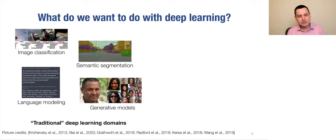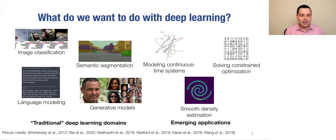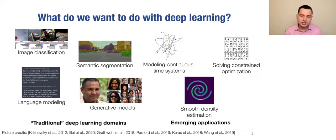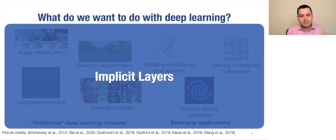We're all aware of the impressive progress these fields have made. But there are also a lot of emerging applications — things like continuous modeling, continuous time systems, smooth density estimation, or solving constrained optimization problems. These are problems that a lot of existing methods in deep learning are not that good at. What we're going to talk about today is a framework which enables you to solve basically all these problems very well — the framework of implicit layers.